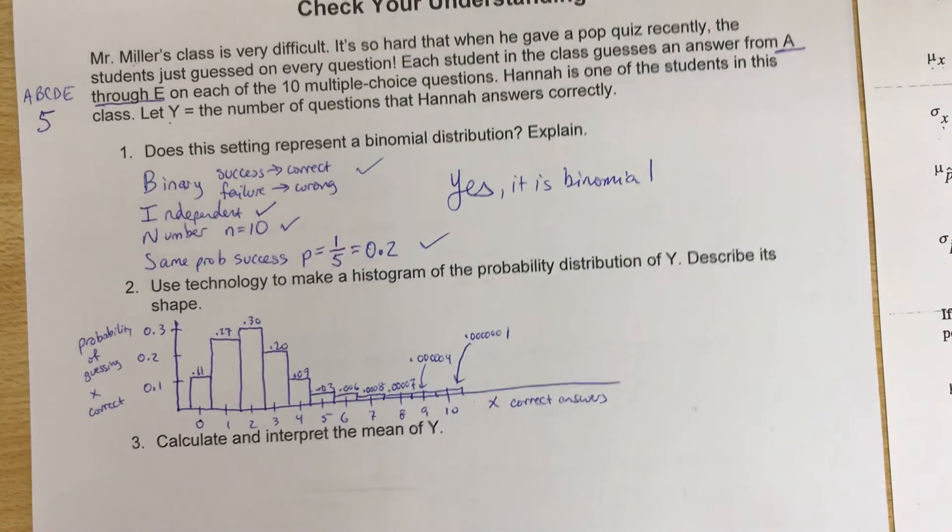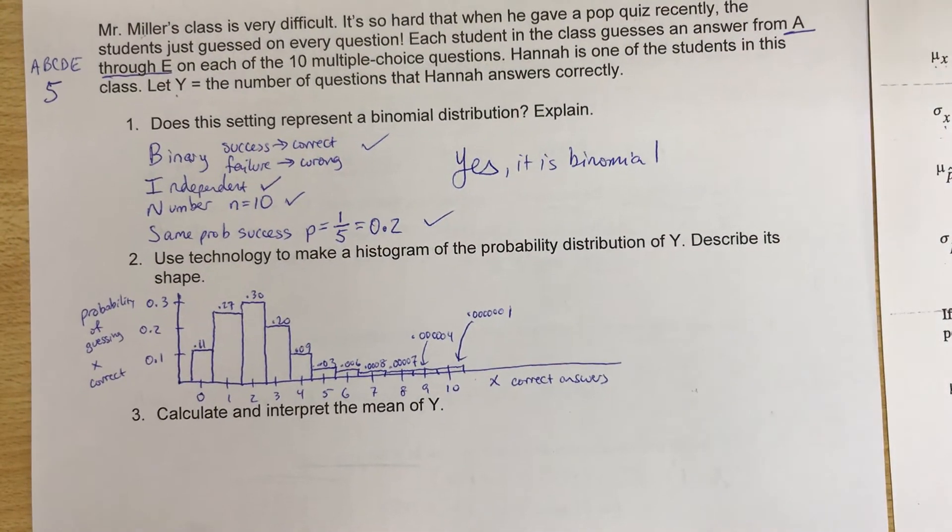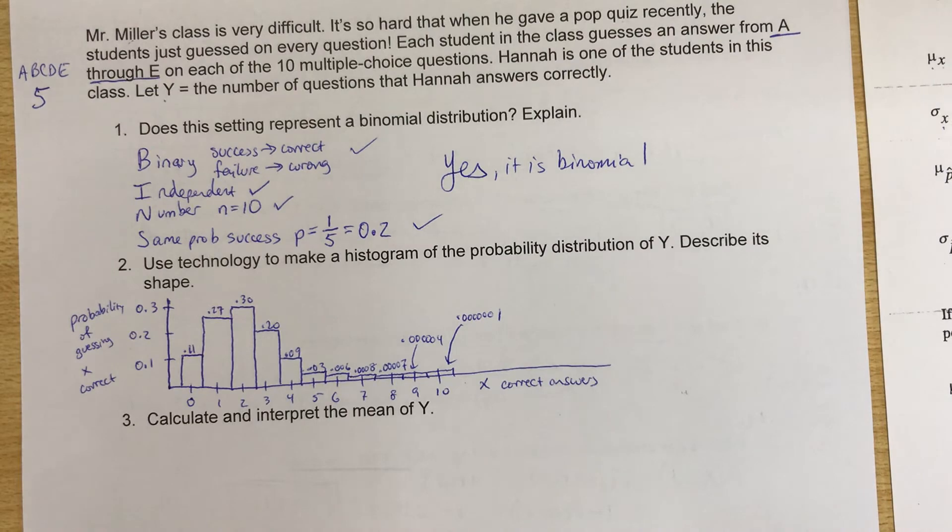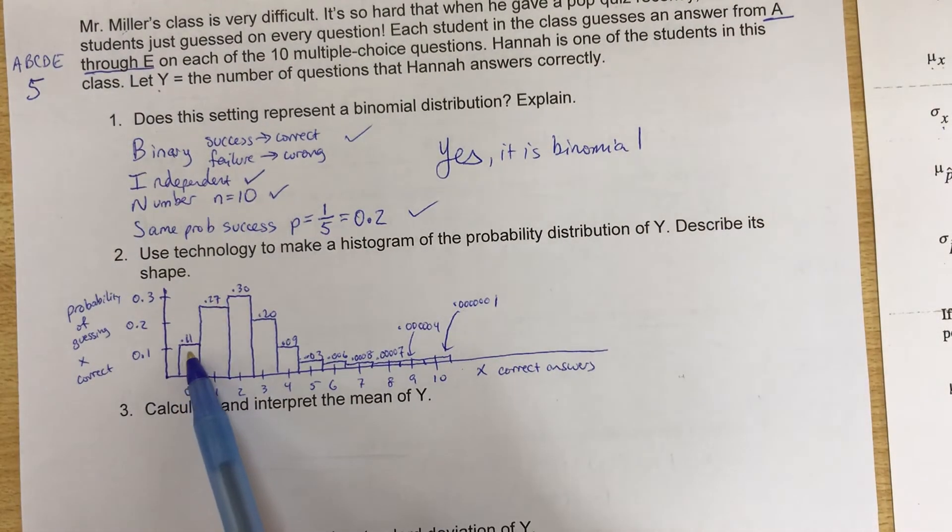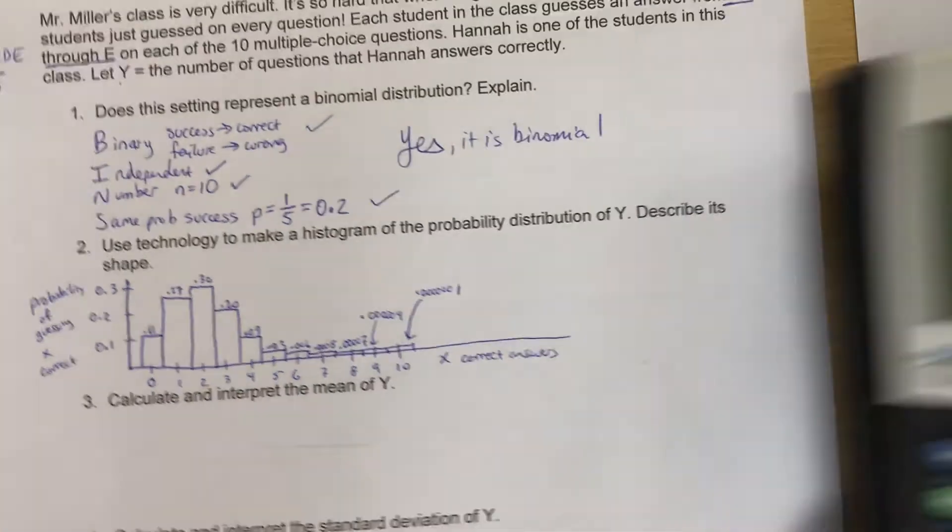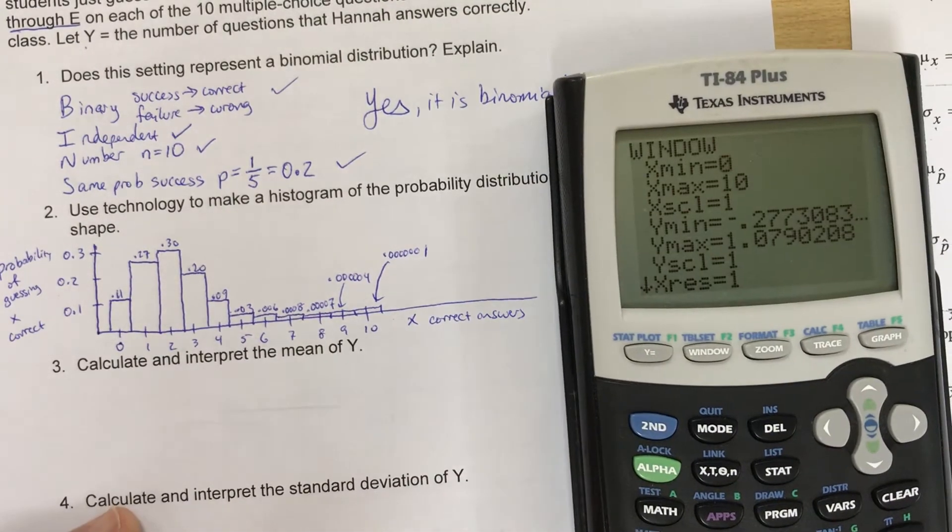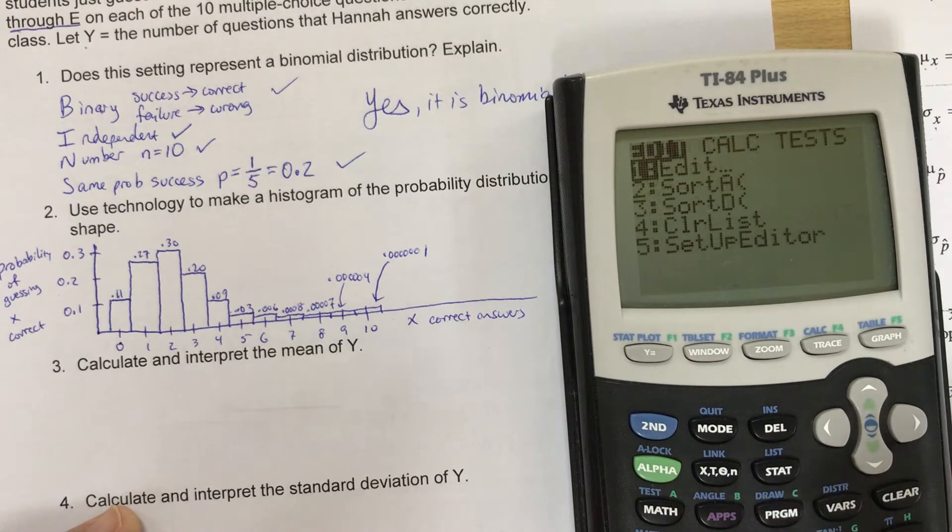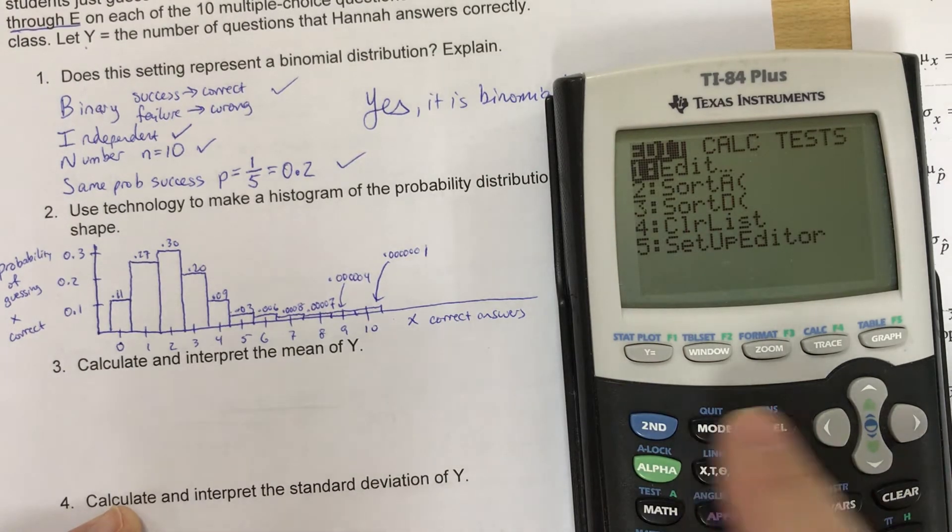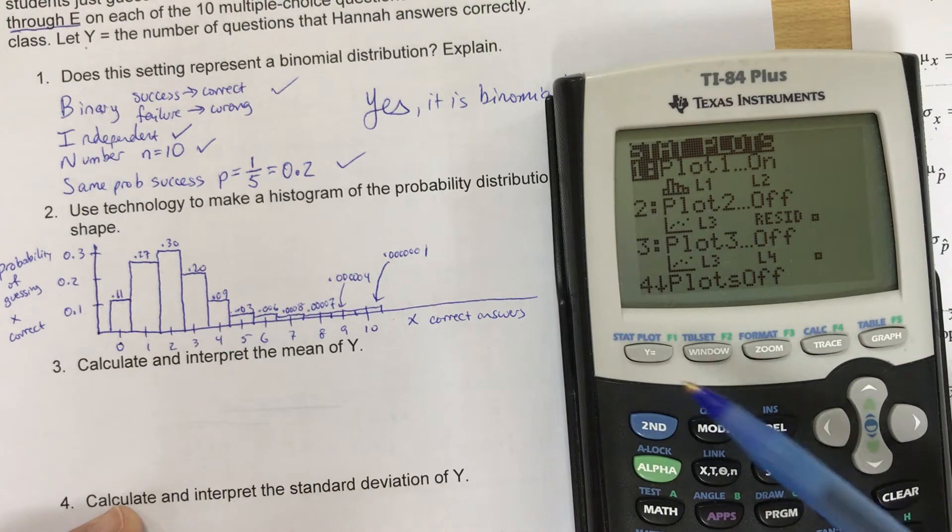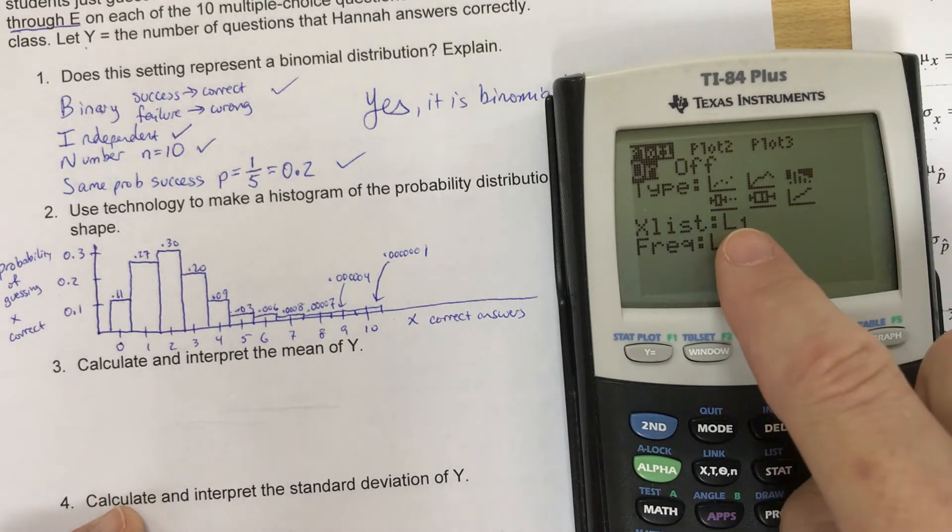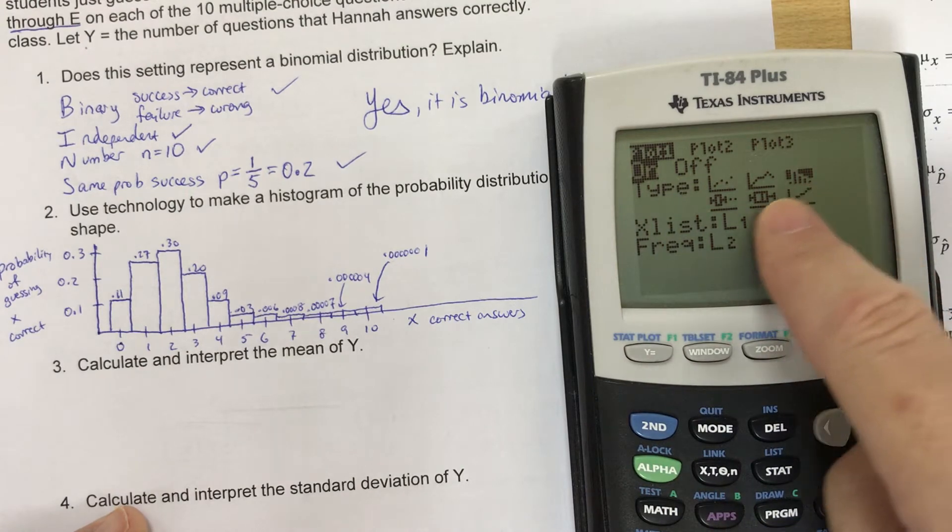Now, it says use technology to make a histogram of the probability distribution of Y. Describe its shape. I've already gone through and I've done this. I had to calculate each of these and then I was able to draw it and I drew it with the calculator. So I went to stat plot, second Y equals, turn my plot on.